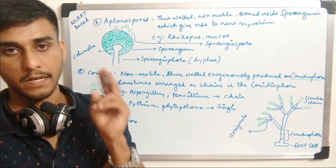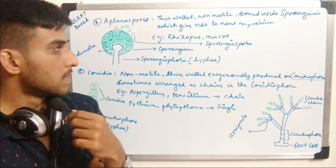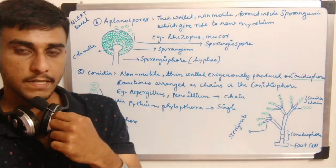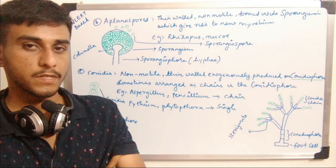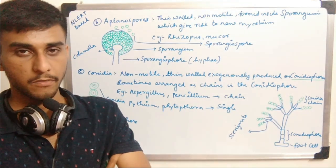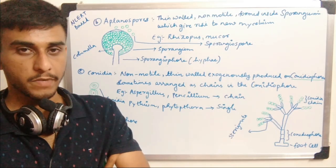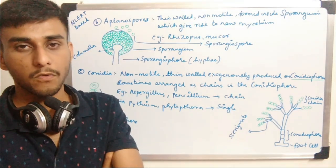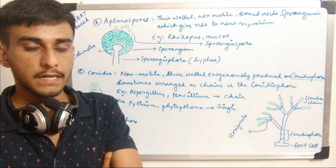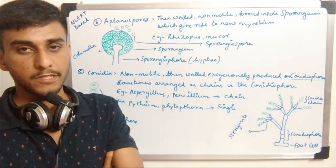Aplanospores are usually dispersed in the water current, moving according to the flow of water. The common examples of fungi that follow the aplanospore mode of asexual reproduction are Rhizopus and Mucor. These examples should be remembered.